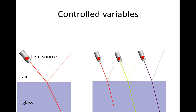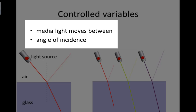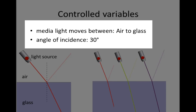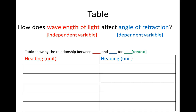Our question is: how does wavelength of light affect angle of refraction? So what do we need to control between our various treatments? Our treatments are going to differ in wavelength of light. To make it a fair test, we need to control the media that the light moves between and the angle of incidence. For this particular investigation, we're going to make light travel from air to glass in all cases, and we're going to choose an angle of incidence of 30 degrees.